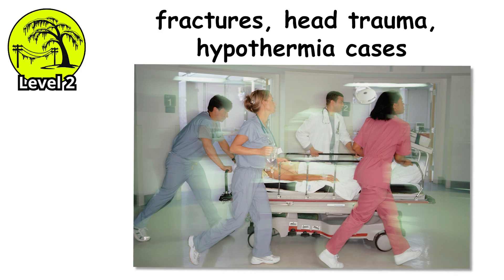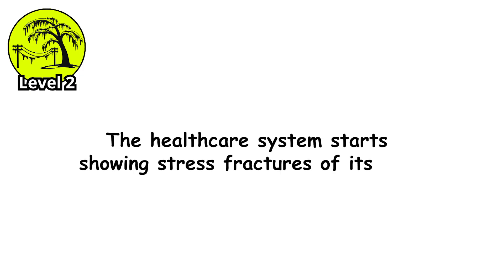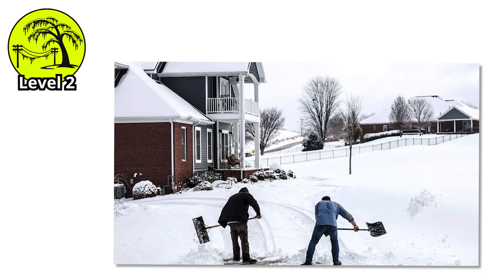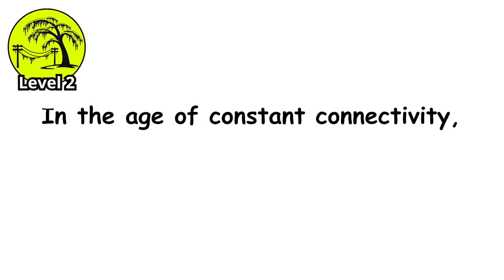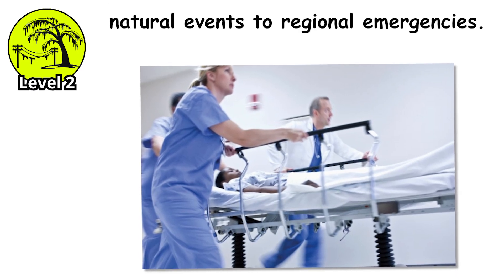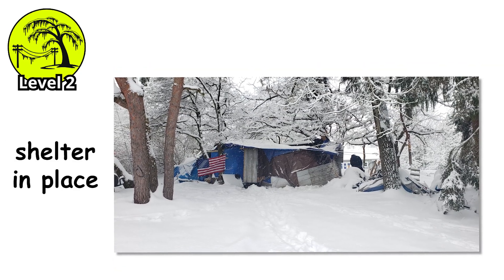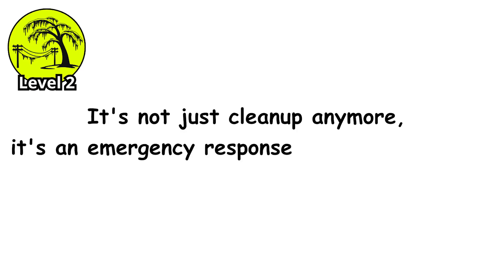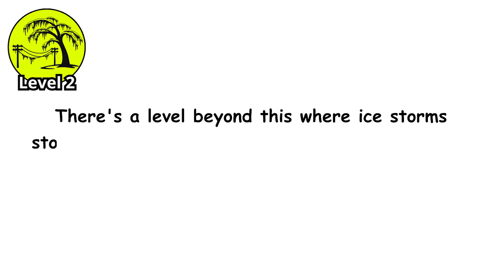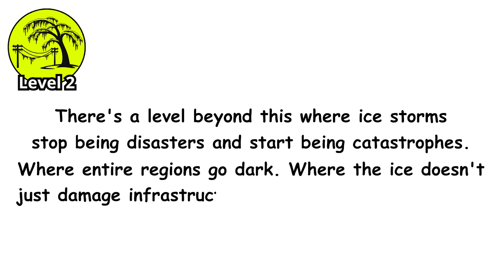Emergency rooms see a spike in fractures, head trauma, and hypothermia cases from people who lost power and heat. The healthcare system starts showing stress fractures of its own. People become informationally isolated, unable to know when conditions will improve, when power might return. In the age of constant connectivity, this isolation feels almost primitive. This is where ice storms transition from natural events to regional emergencies. The National Weather Service issues warnings. States declare emergencies. People are told to shelter in place. It's not just cleanup anymore — it's an emergency response on a massive scale. But we're still not at the worst-case scenario.